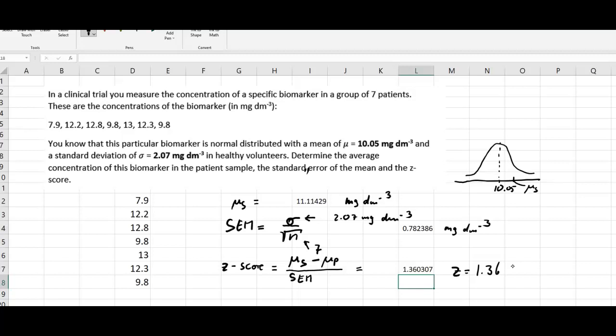That would be here, 1.36 standard deviations. Or in this case, we'll probably use the standard deviation as the SEM. 1.36 times the standard error of the mean, which is the new standard deviation for our sample distribution. We see that the sample mean is 1.36 times the standard error of the mean above the population mean of 10.05.